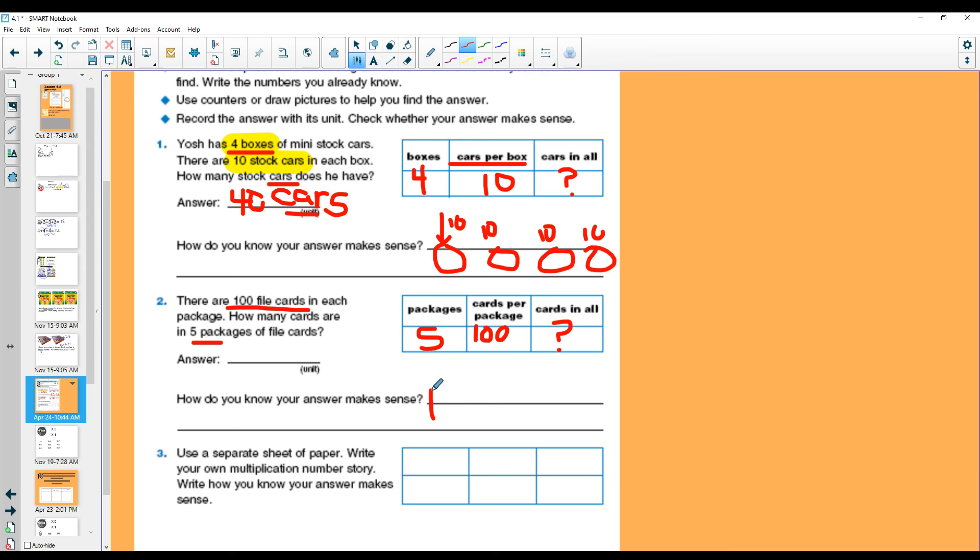I'm trying to figure out cards in all. So think of your packages. One, two, three, four, five. Okay. How many does each one have? Each one has one hundred. There's one, there's one. My pen is going crazy. We have a hundred in each one. So if you think, how many is that in all? One, two, three, four, five hundred.